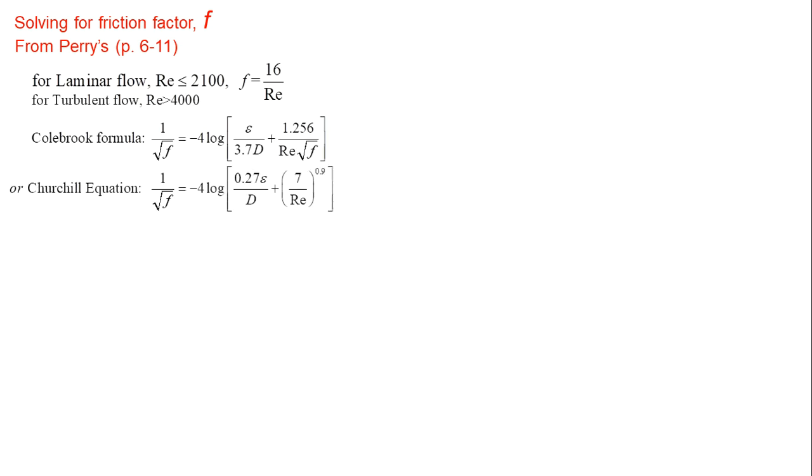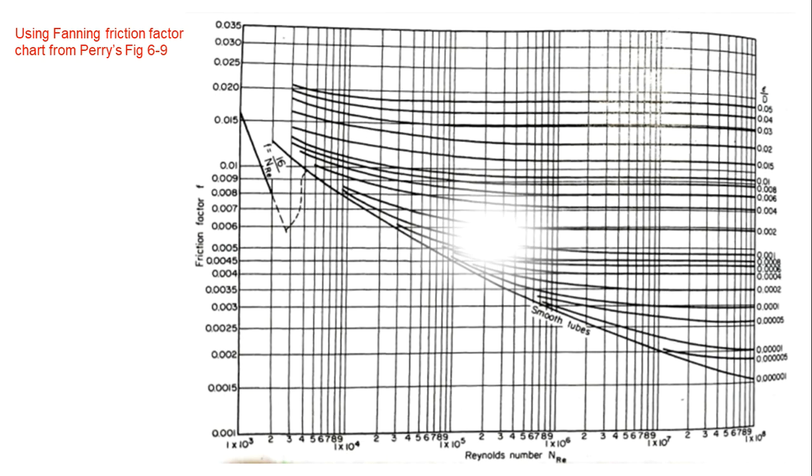For friction factor, there are several ways of solving. The most common of which are correlations from Perry's such as Colbrook and Churchill formulas. A chart could also be used in solving for friction factor. This is the fanning friction factor chart from Perry's. It is a function of Reynolds number and surface roughness over diameter of the pipe.